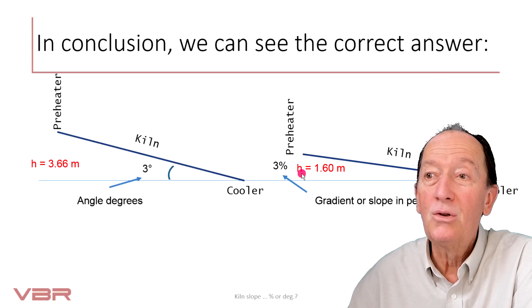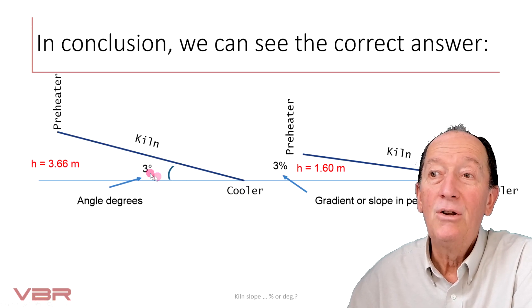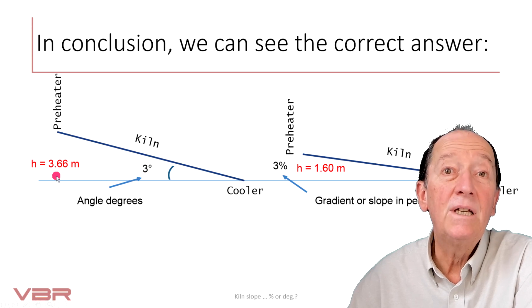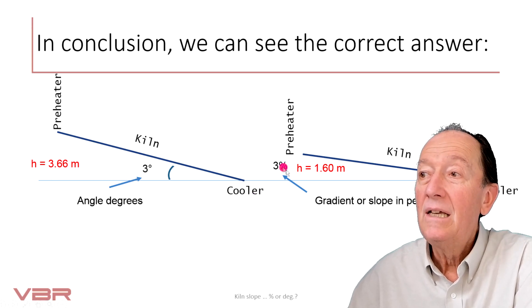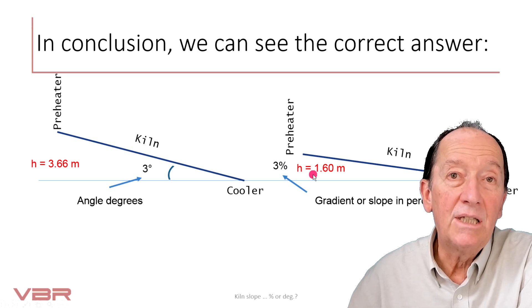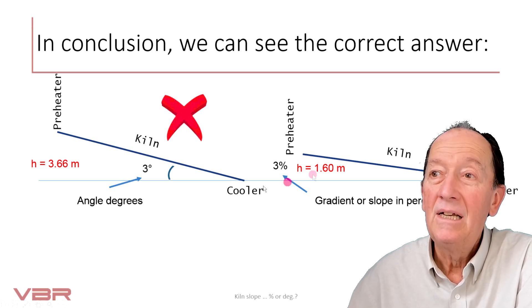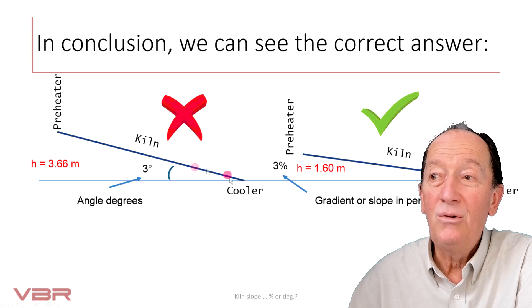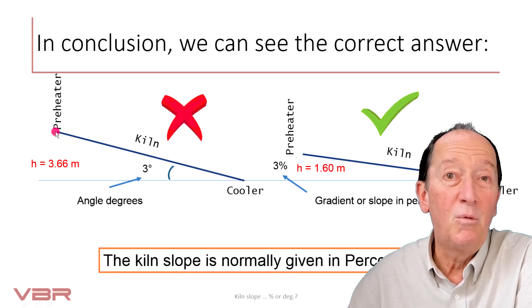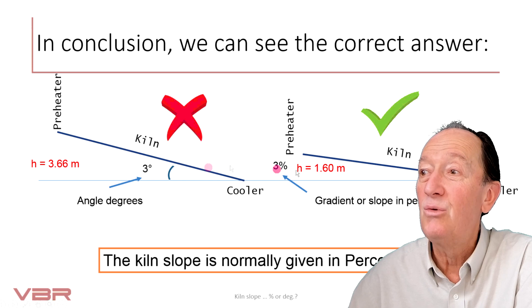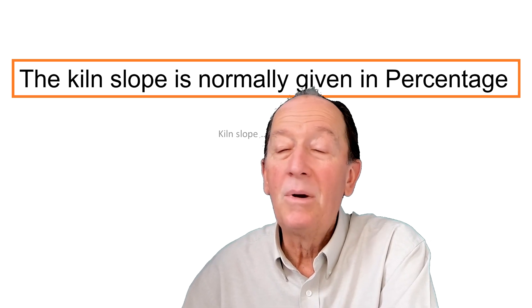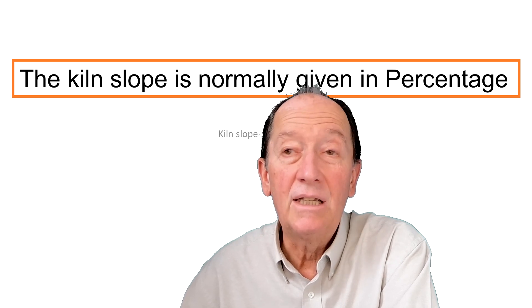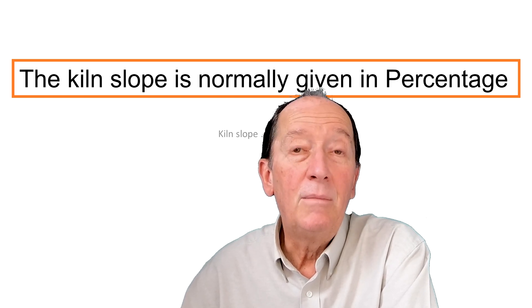If we compare those two results. Again, 3 degrees, height is 3.66 meters. 3% height is 1.60 meters. I think there is no doubt about it. If you go to your kiln and you will see it is not more than 3 meters 50. It is rather 1.60 meters higher up. Kiln slope is normally provided as a percentage by manufacturers. I hope this helps clarify the confusion.